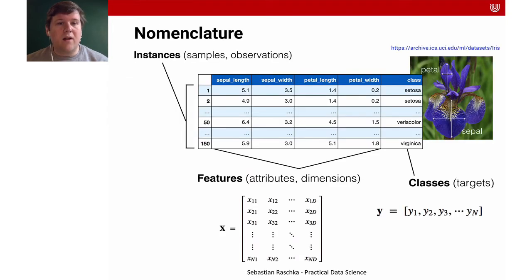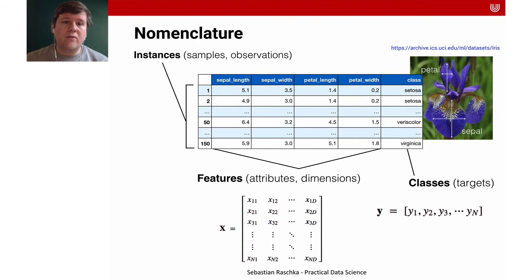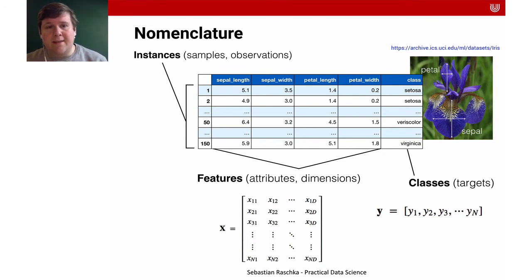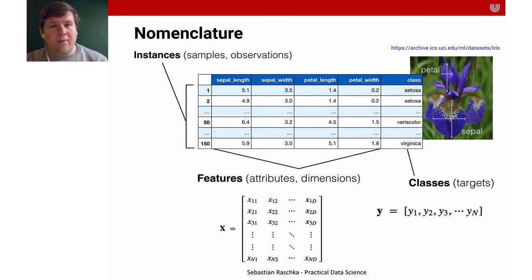Just to recap the nomenclature: we talk about features, attributes, or dimensions for X, and classes or targets for Y. Each individual data point — each individual tumor cell — is called an instance. For each instance, we have features such as the number of concave points and the area in pixels, and we have classes: the assessment of whether it's benign or malignant.